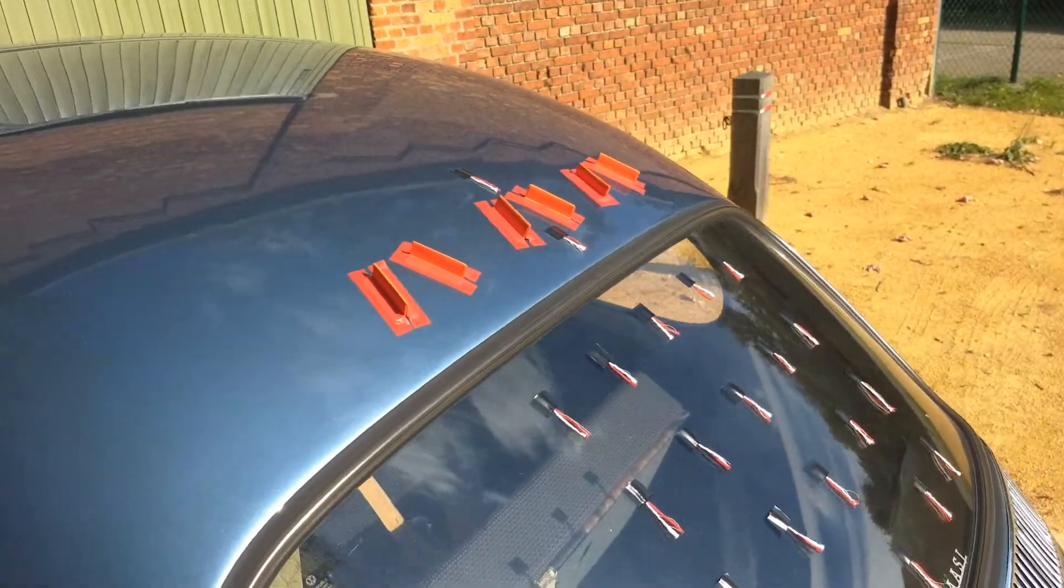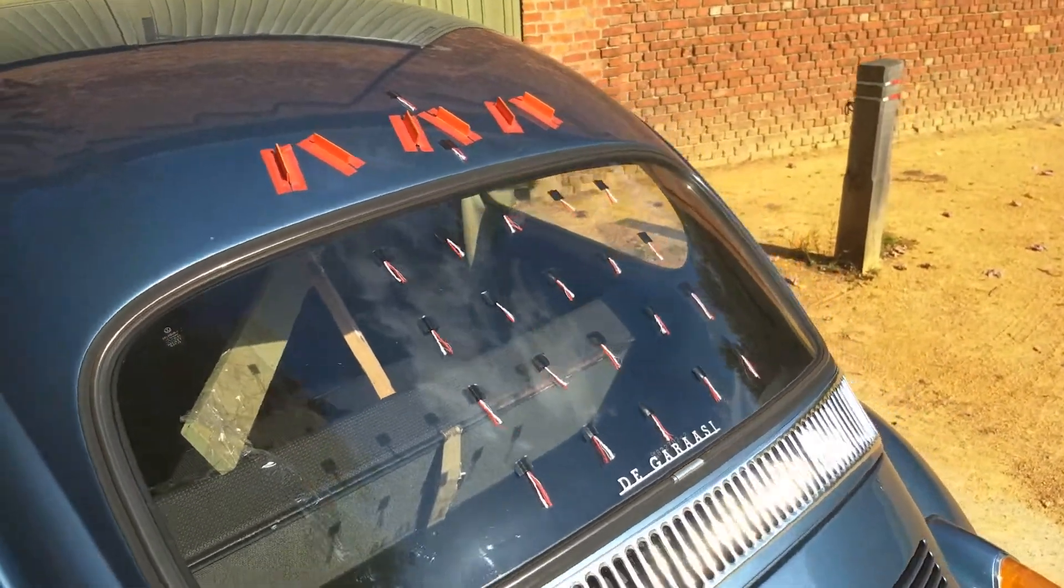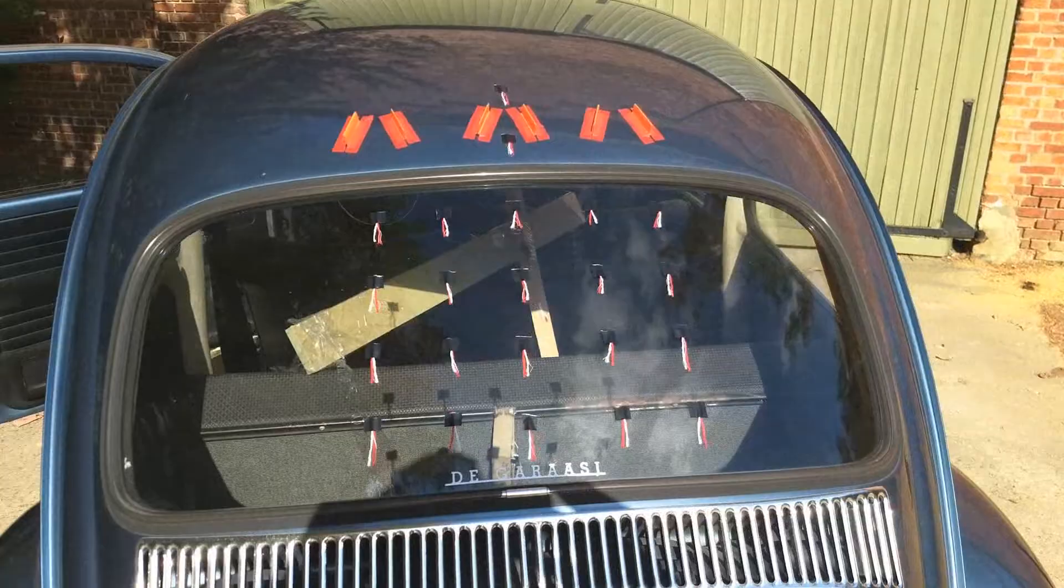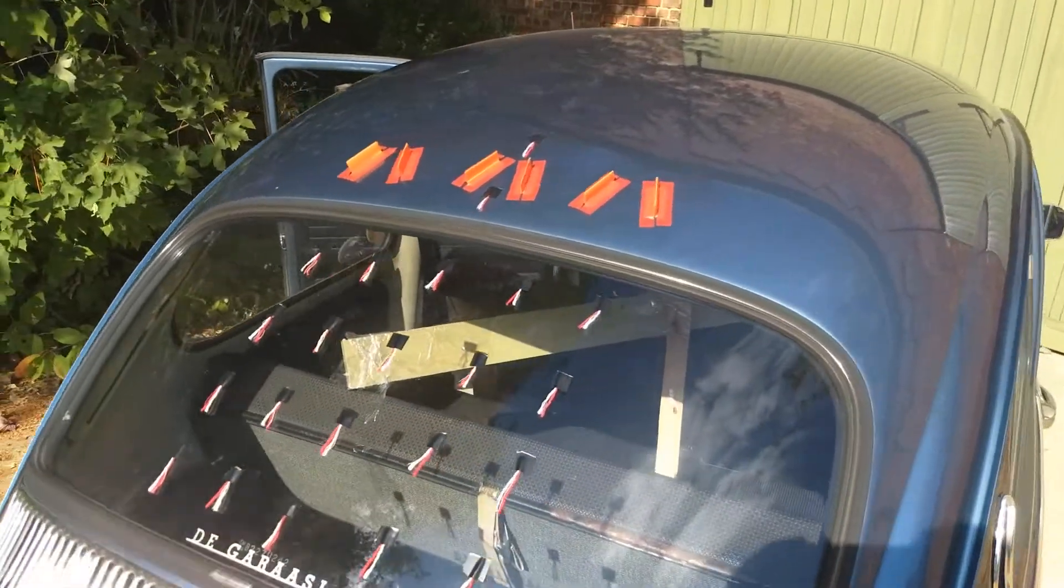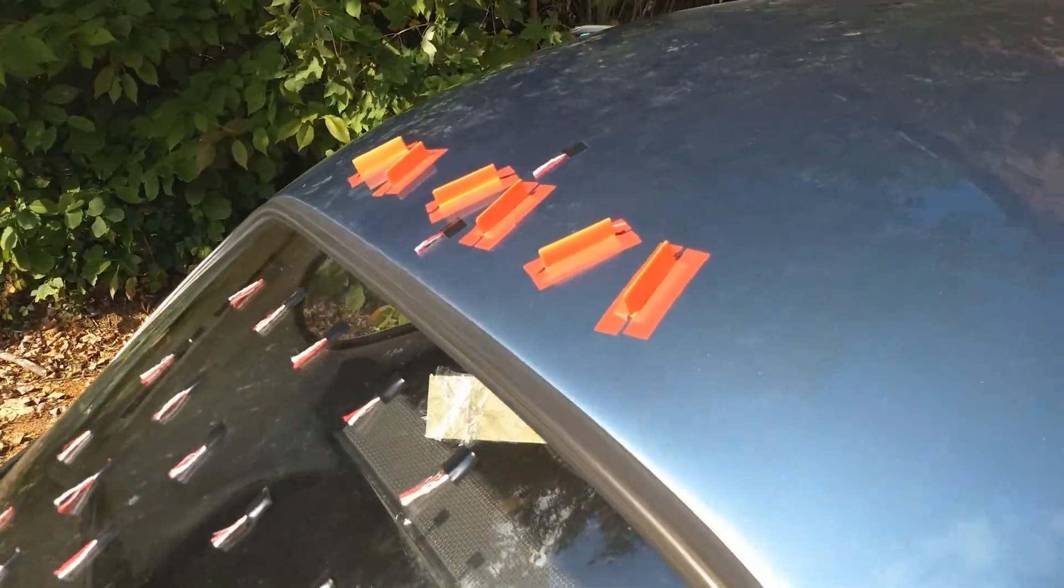Another way is to install vortex generators. Vortex generators are small devices that improve the transition of momentum from the free stream air to the boundary layer, giving it the required energy to follow a curvature.